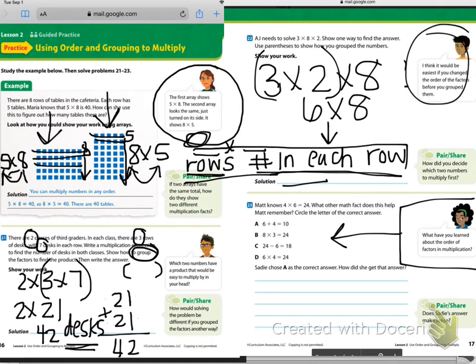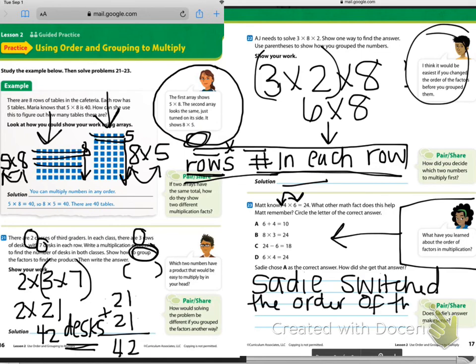It says Sadie chose A as the correct answer. How did she get that? Well, here's a hint. Sadie was wrong. Sadie did not choose the right answer. So don't change your answer to A just because Sadie chose A. What Sadie did is she switched the order of her factors. But then, instead of multiplying, she added. And that was not right. She should not have added. So find the correct answer for number 23.